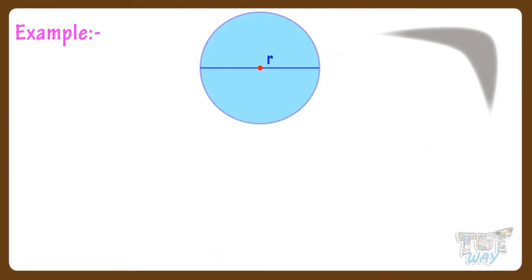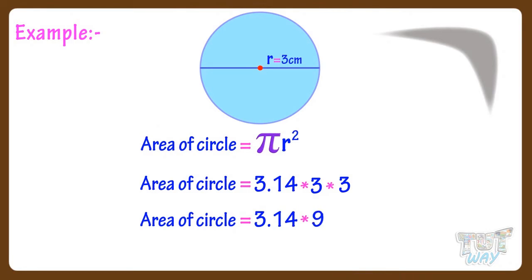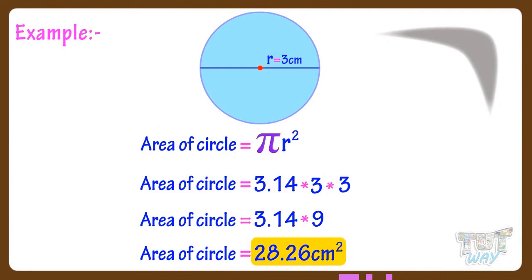Now let's take an example. Here we have a circle and its radius is given, which is 3 centimeters. We know area of a circle is πr². So we will write it as: area of circle equals 3.14 × r² = 3.14 × 3 × 3 = 3.14 × 9, which gives us 28.26. So the area of this circle is 28.26 centimeters square, as area is always mentioned in square units.